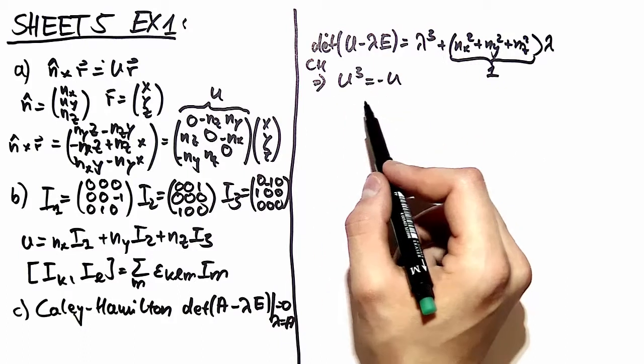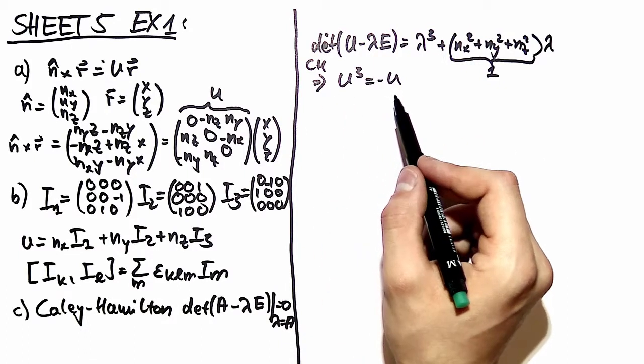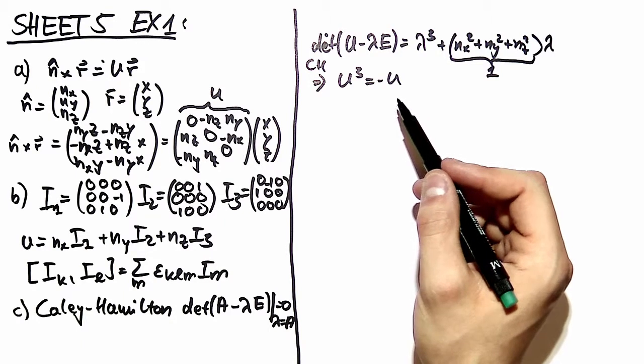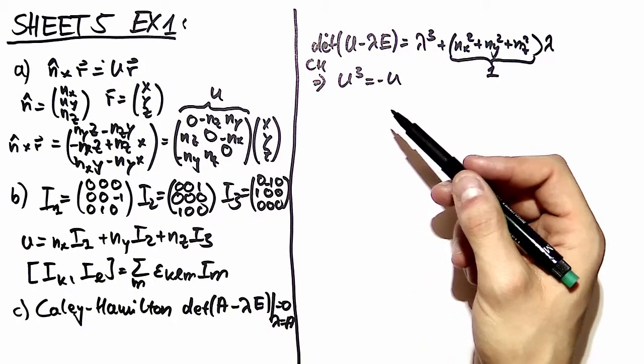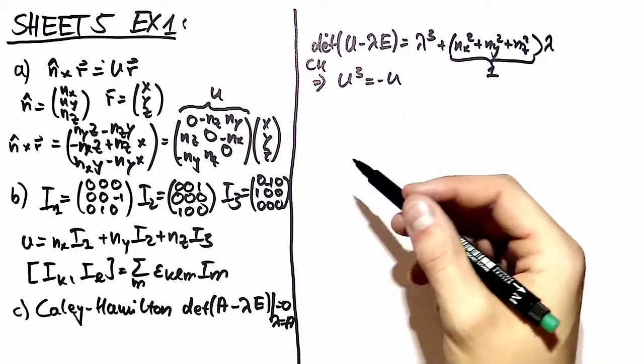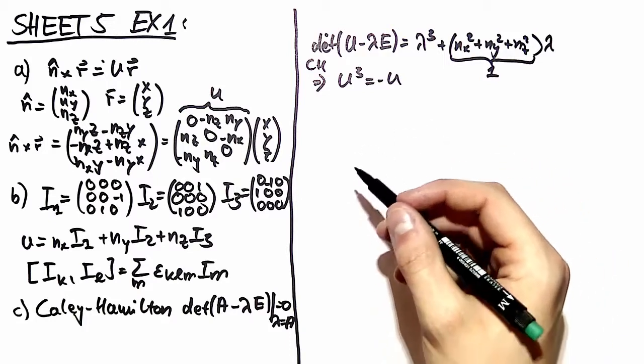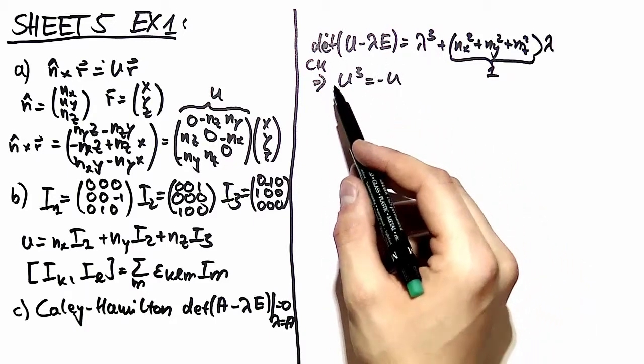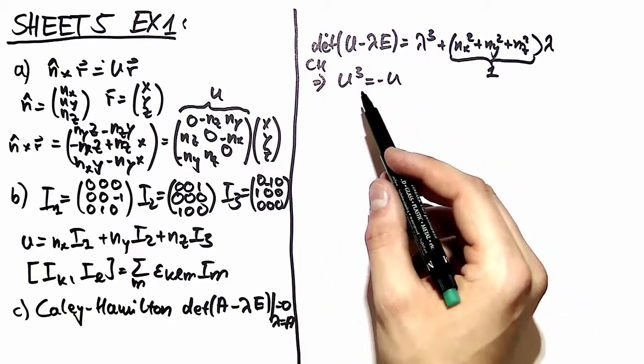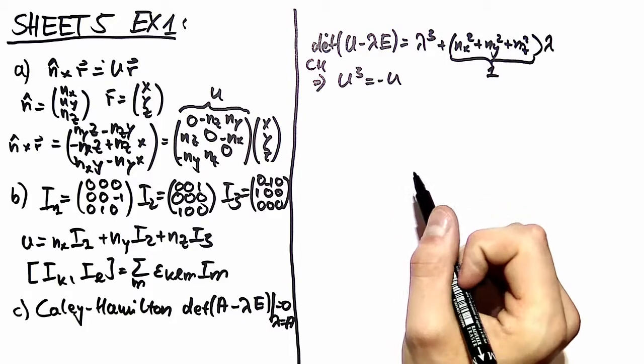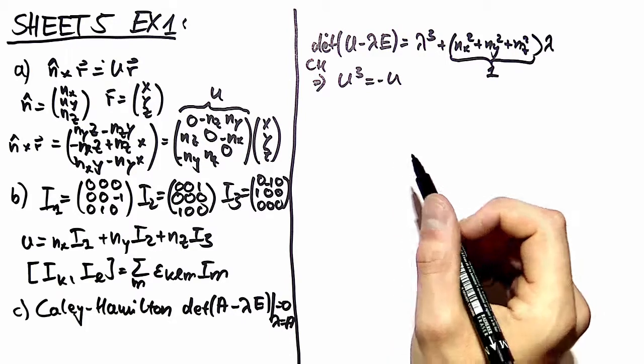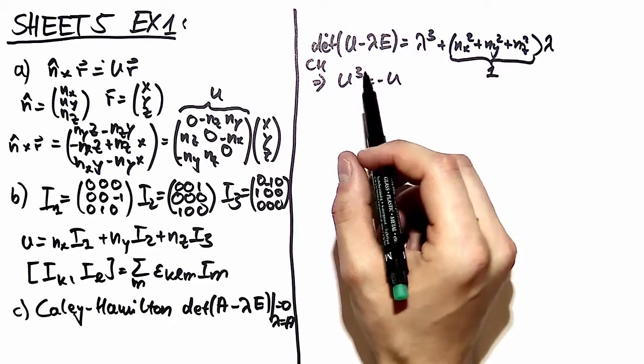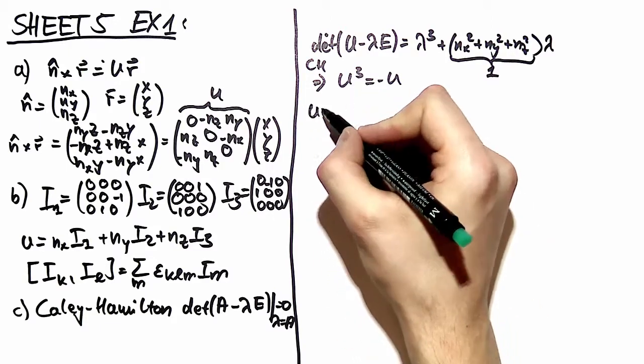This solves the problem of computing the powers in your exponential Taylor series from exercise sheet number 4. As you might remember we have the exponential of your matrix and then you compute the powers in order to recognize a pattern in the Taylor series. And this Cayley-Hamilton theorem gives you the pattern in your exponential series. So you have to only know three different matrices in order to know all powers of u.